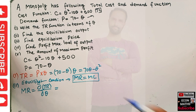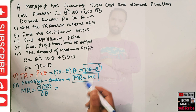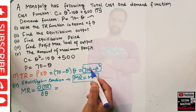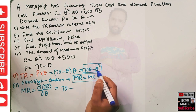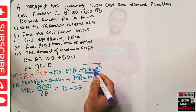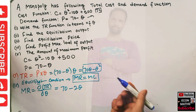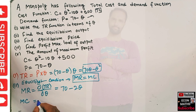Our total revenue is 70q minus q squared. Taking the derivative: the derivative of 70q gives 70, and by the power rule the derivative of q squared is 2q. So our marginal revenue is 70 minus 2q.